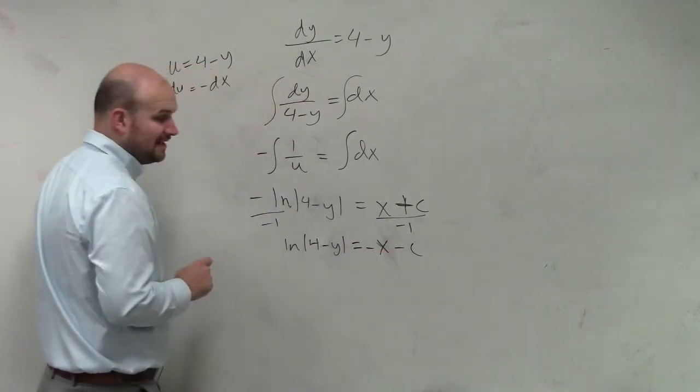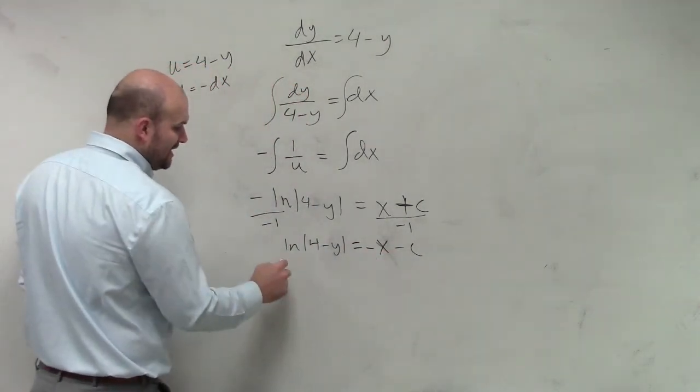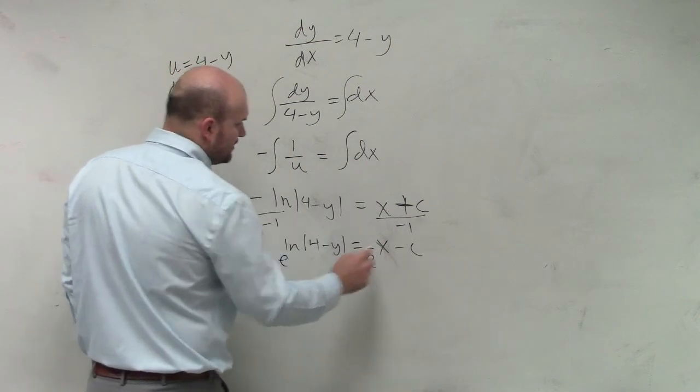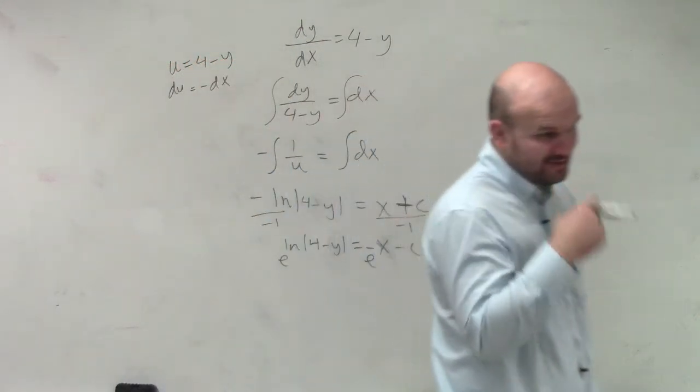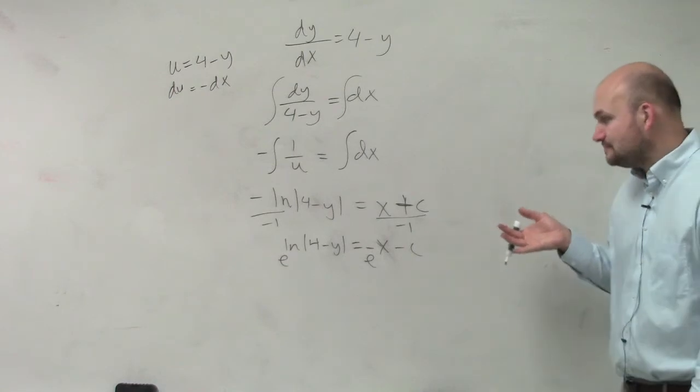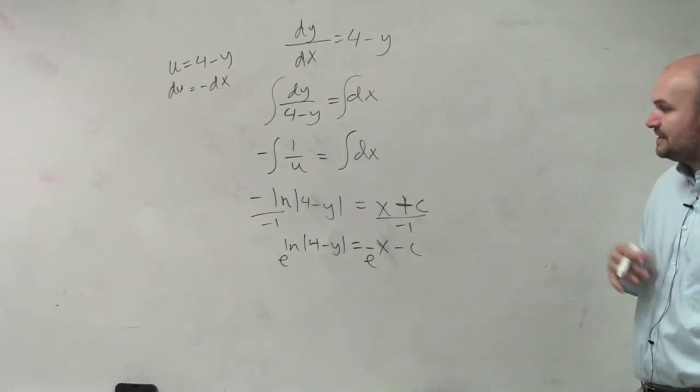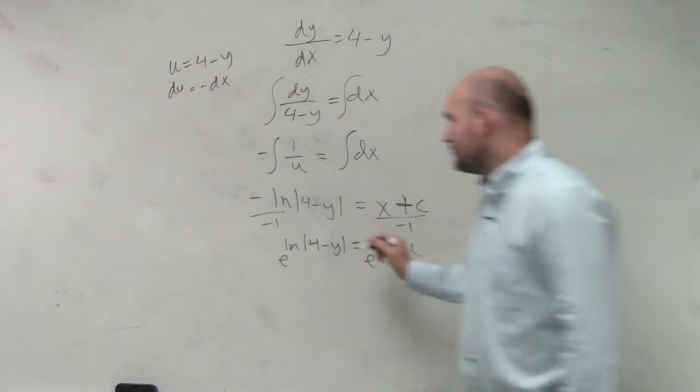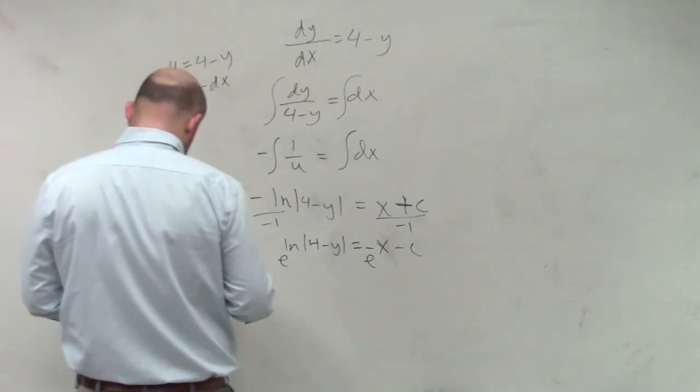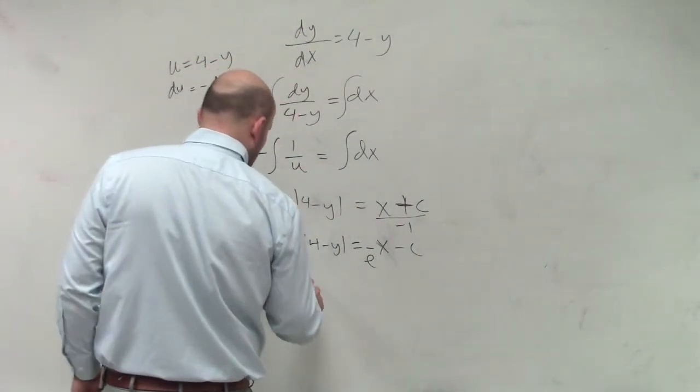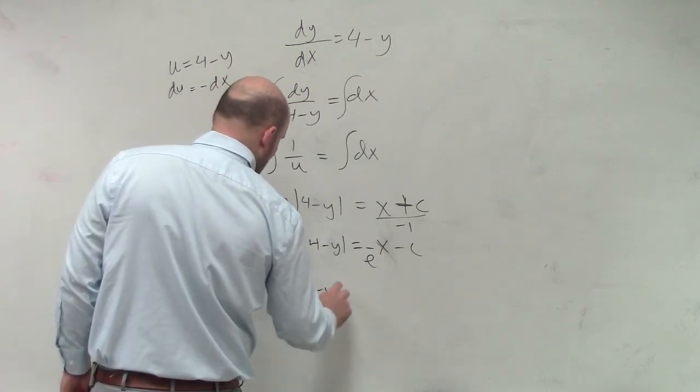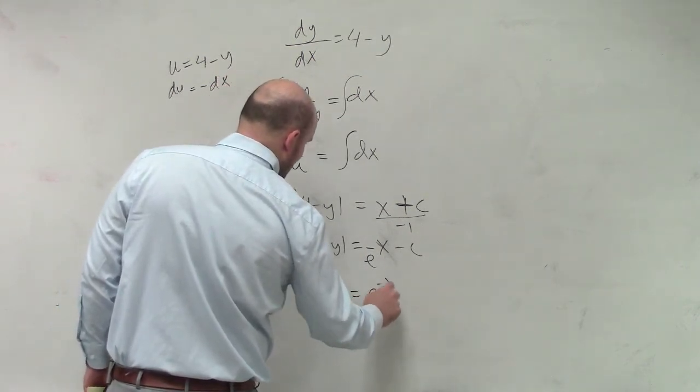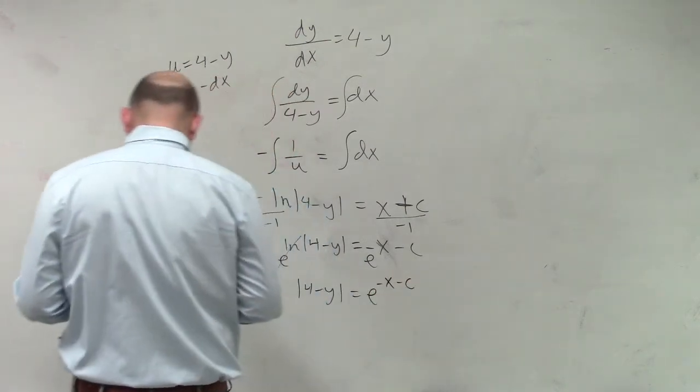Now, I need to get rid of the ln. What we can do to get rid of the ln is raise everything to the power e. So therefore, what that does is that gets rid of our ln. Then we're left with the absolute value of 4 minus y is equal to e to the negative x minus c.